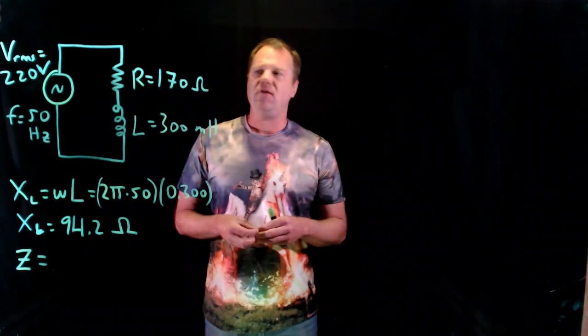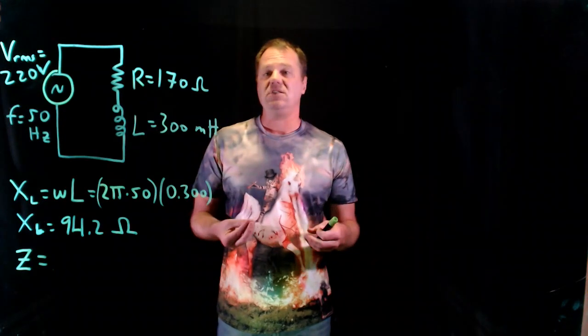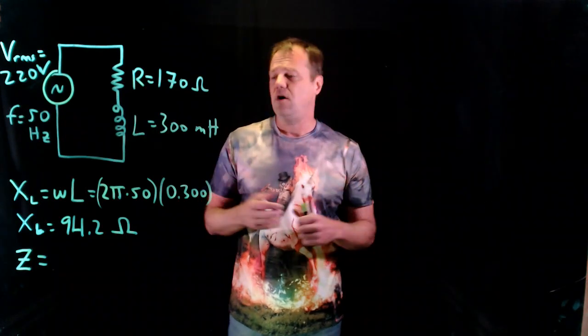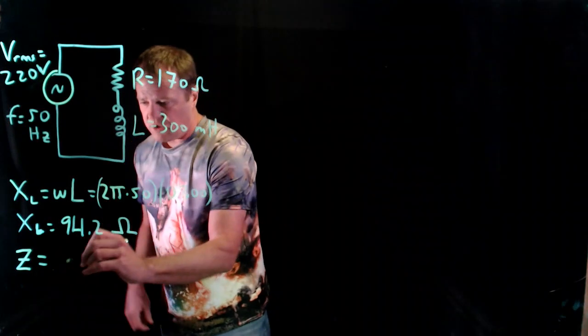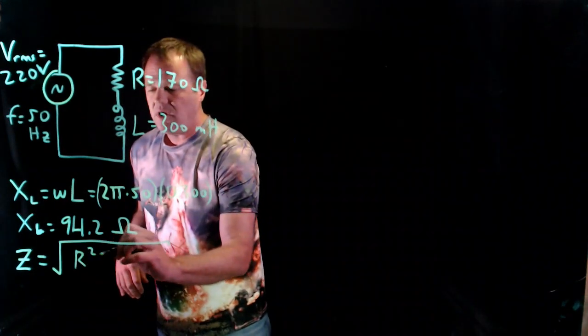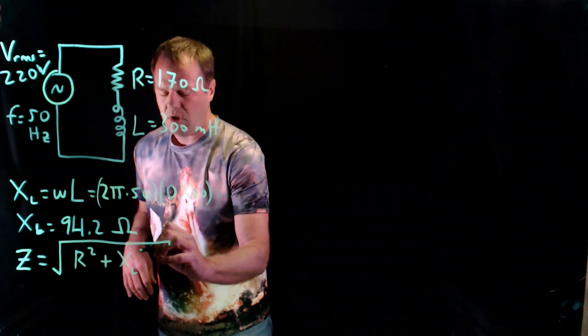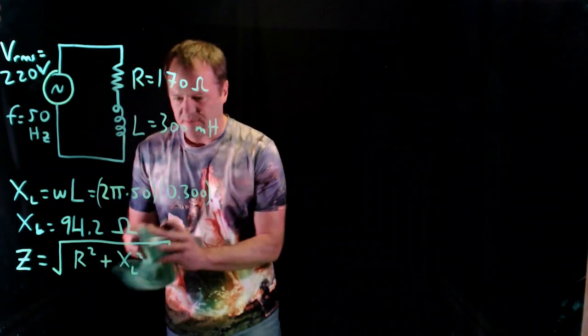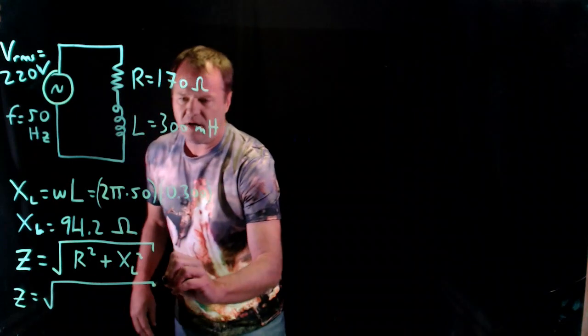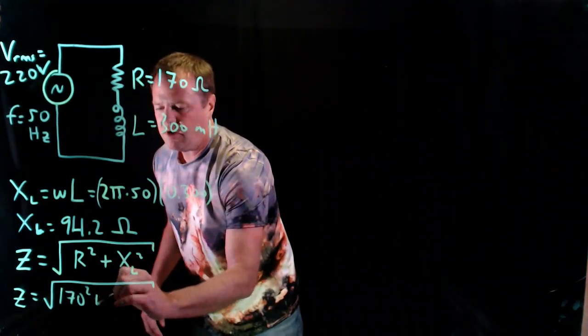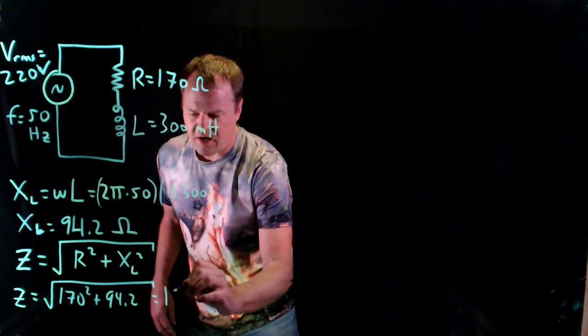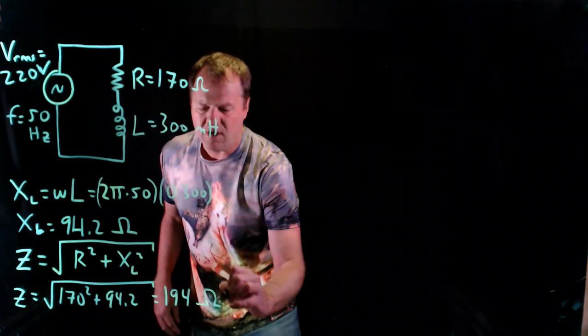This is a thing that we calculate for combinations of circuit elements in AC circuits. So think of impedance as kind of taking the place of equivalent resistance if you had a DC circuit and a complex network of resistors. So the impedance for this particular circuit, this is not a general purpose formula, would be square root of R squared plus the inductive reactance squared. So square root of the resistance, which is 170, square that plus the inductive reactance, which I just calculated to be 94.2. And I throw that into my calculator and I get 194 ohms.